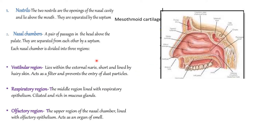Let's see first about the nose. There are two nostrils which are the openings of the nasal cavity and lie above the mouth. They are separated by a septum known as the nasal septum, which is the cartilage that separates the left and right sides of the nose.